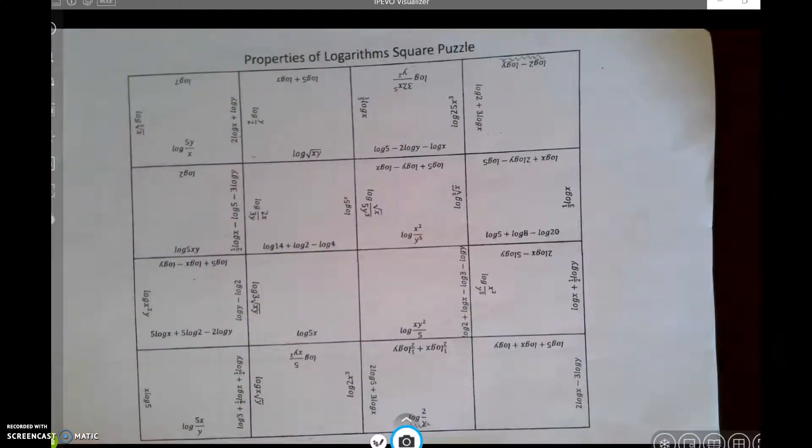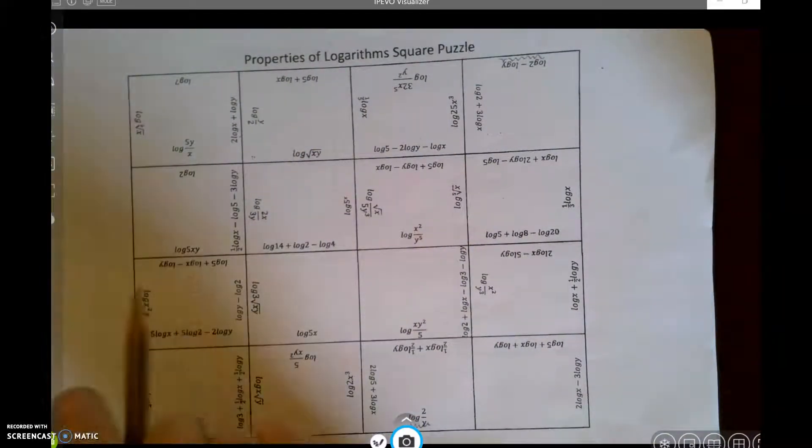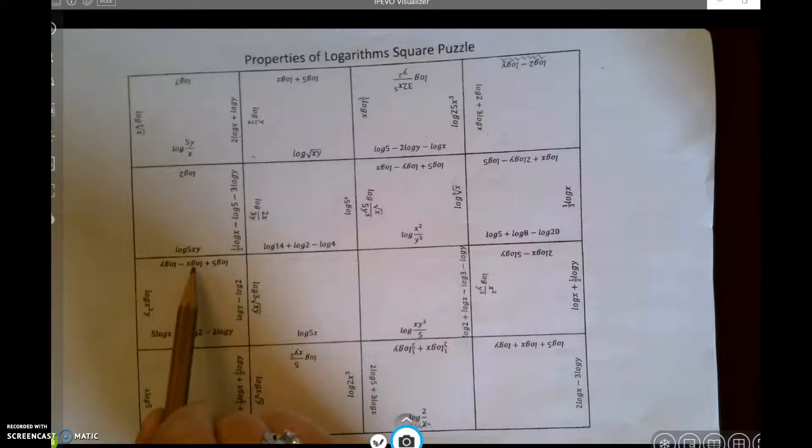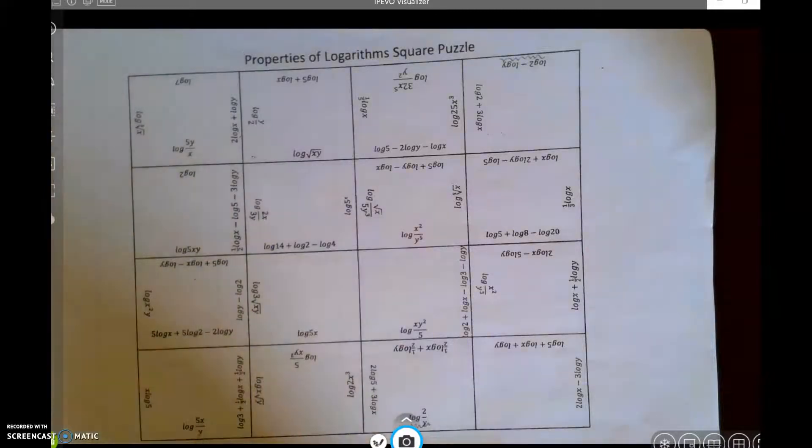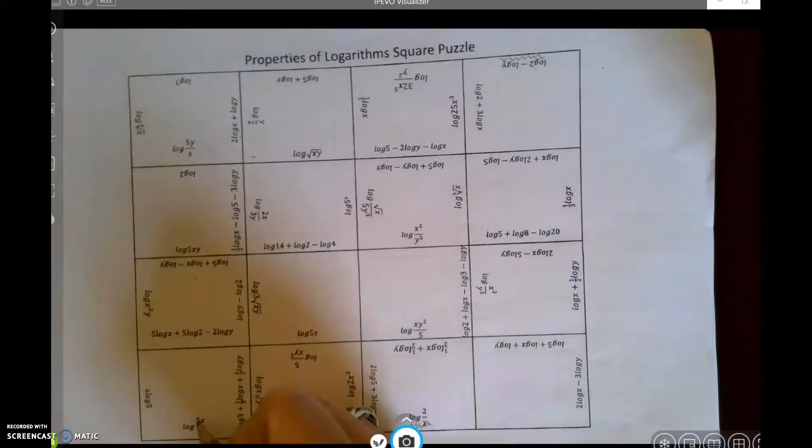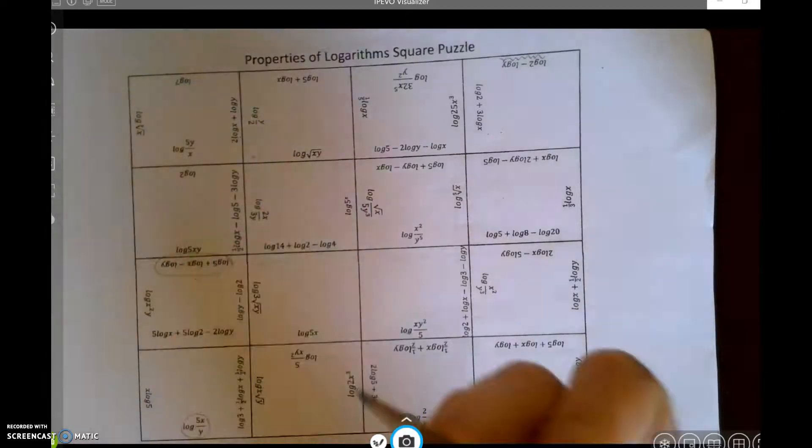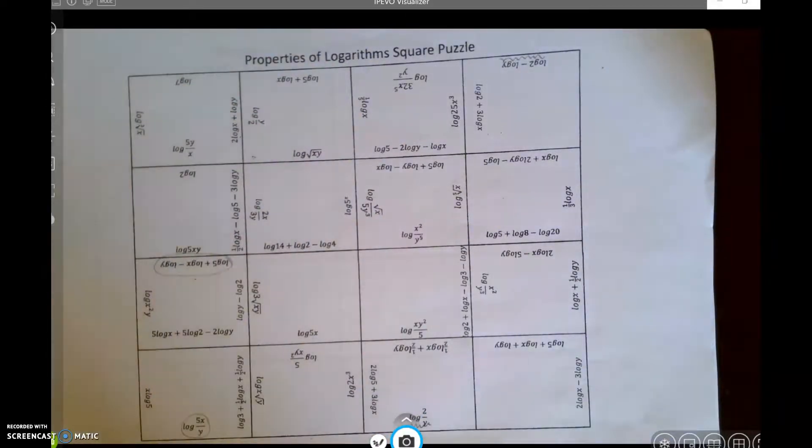Let's do another one. How about this? Log of 5 plus log of x minus log of y. That would mean 5 times x divided by y. So log of 5 times x divided by y, which is right here. Maybe I want to circle this one, and I want to put a circle around this one.